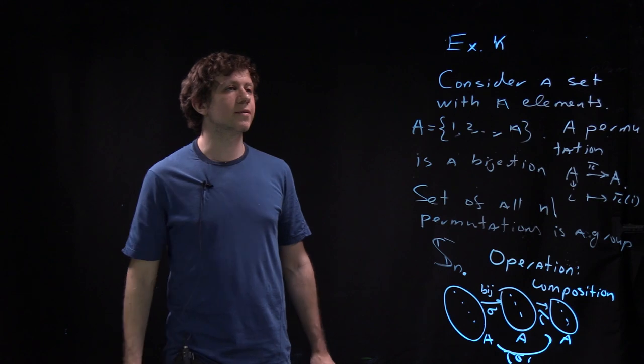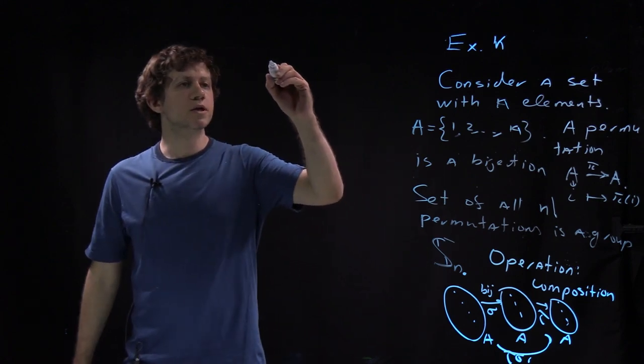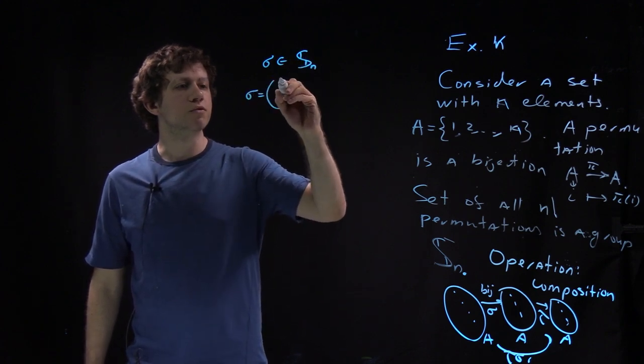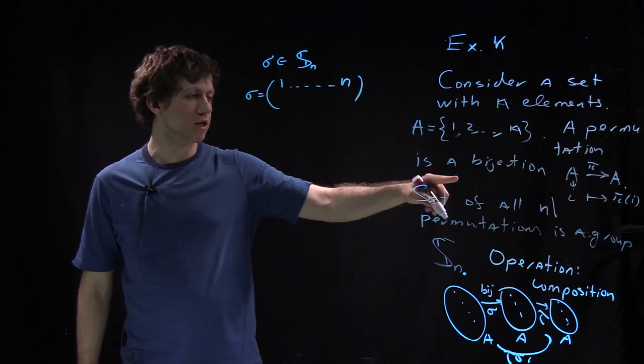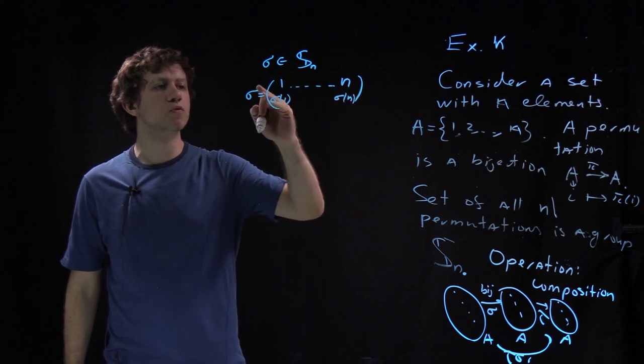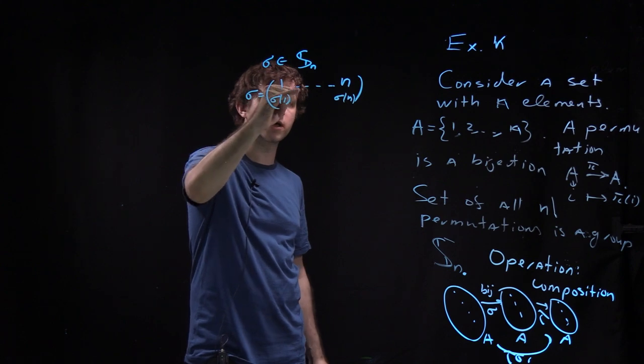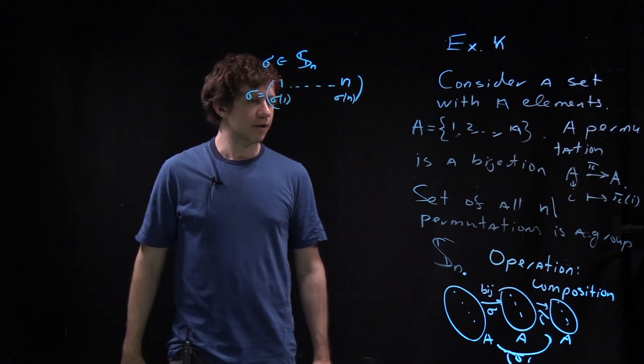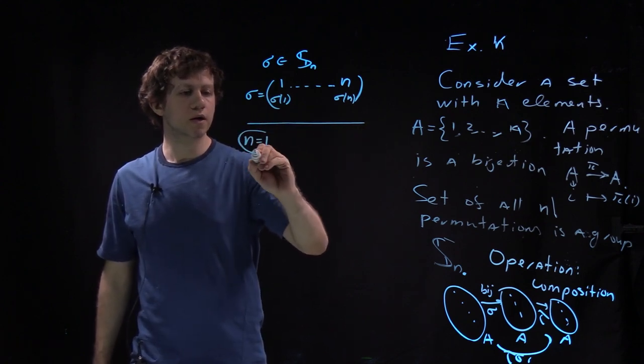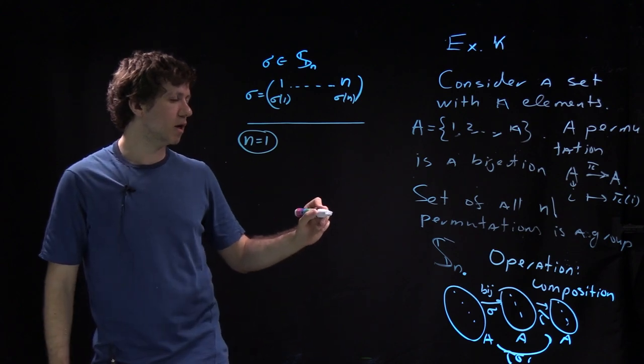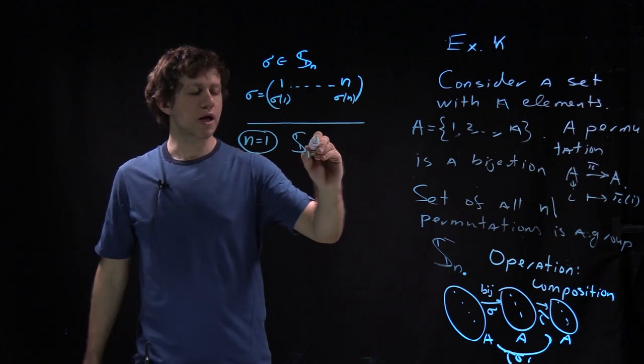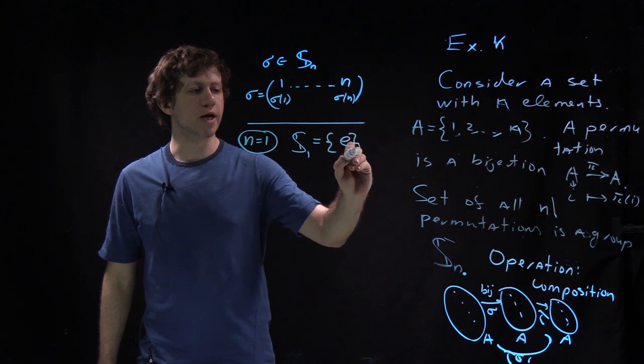So let's look at some examples and also notation. So notation sigma inside Sn usually people write as follows. So you just write all elements of your set which in my case are one to n and underneath you say for each of them where it goes. And you get this sort of two by n matrix if you wish where you have just one where one goes to, where two goes and where n goes.